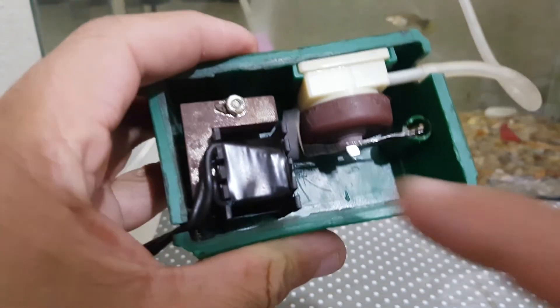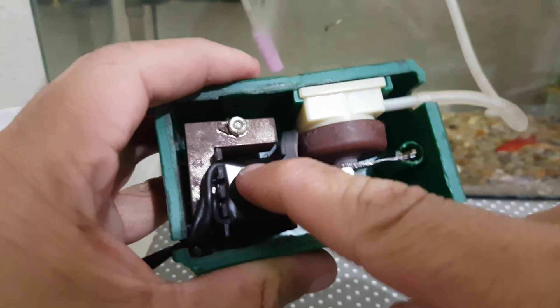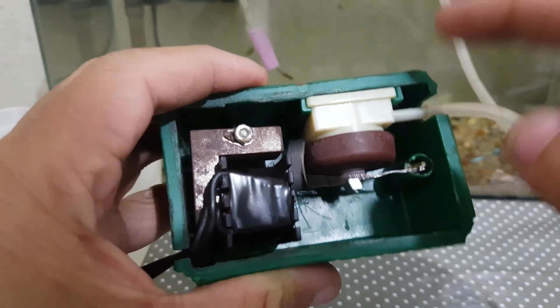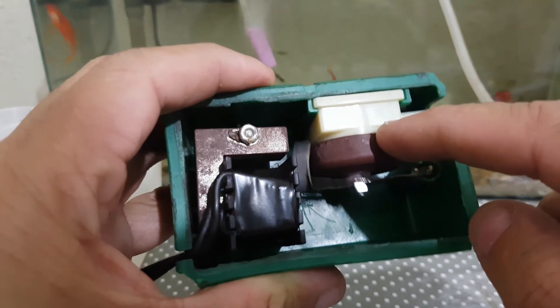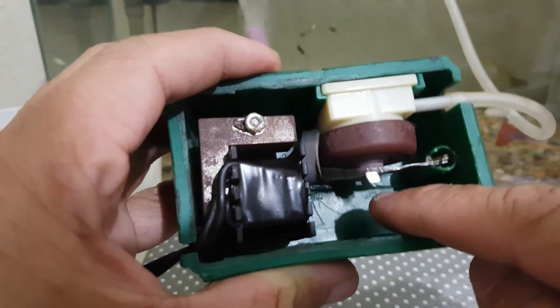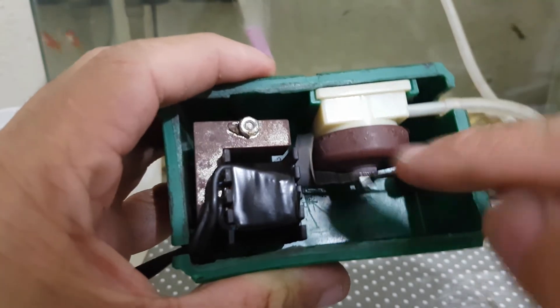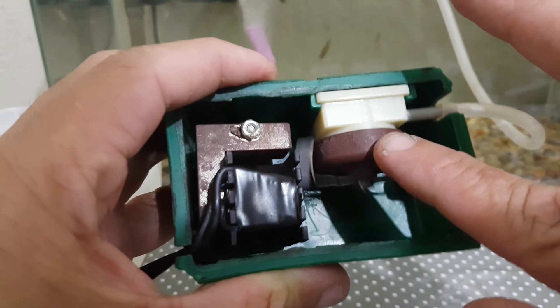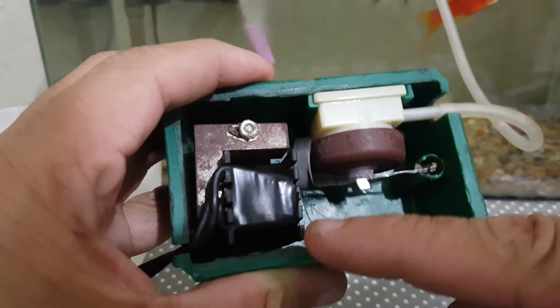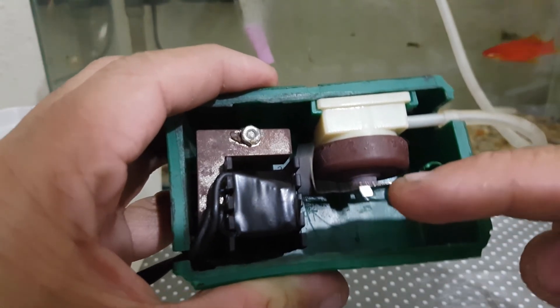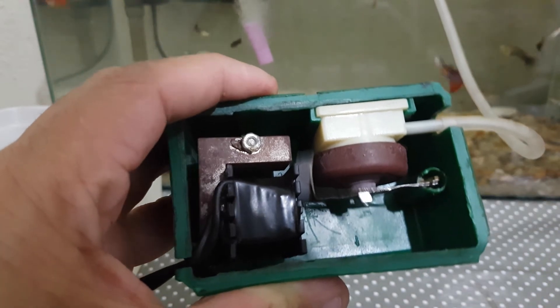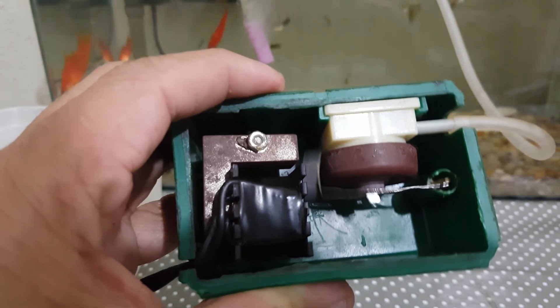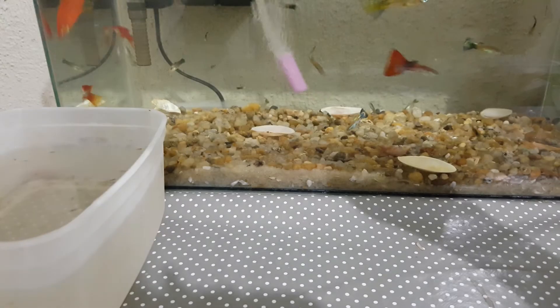Então, galera, toda vez que acontecer esse problema, que vocês perceberem que o seu compressor parou, ele produz barulho porque tem vibração mas está sem ar, vocês podem vir direto no diafragma que o problema é esse, entendeu? Ou ele rasga aqui, o parafuso, por conta da vibração, ou ele resseca, ou ele rasga em volta ali. Ou ele vai ter algum problema com o diafragma. O motor está bom, o enrolamento aqui está bom, não tem oxidação, não rebentou fio nem nada. Então a gente pode ter certeza que o problema é o diafragma.